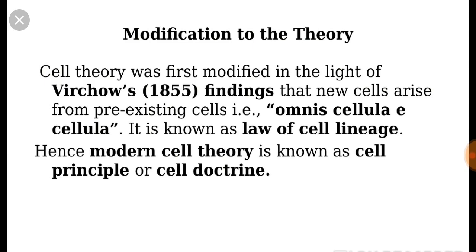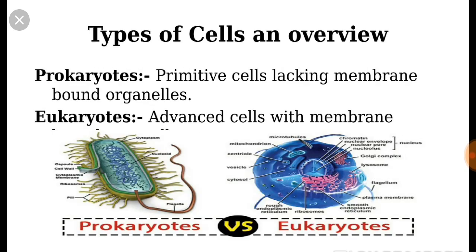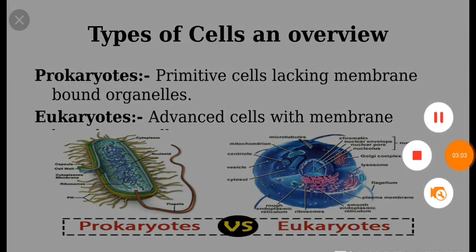Now there are two kinds of cells: prokaryotes and eukaryotes. Prokaryotes are primitive cells lacking membrane-bound organelles, whereas in eukaryotes, cells are very advanced and well-developed, and the organelles are bounded by membranes, as can be seen in the diagram.